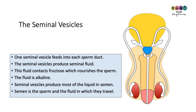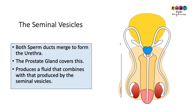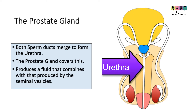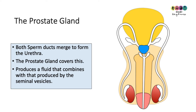Semen is the combination of the liquid and the sperm. Both sperm ducts merge together to form the urethra, and sitting on top of this is the prostate. The prostate produces more fluid which combines with that produced by the seminal vesicles.